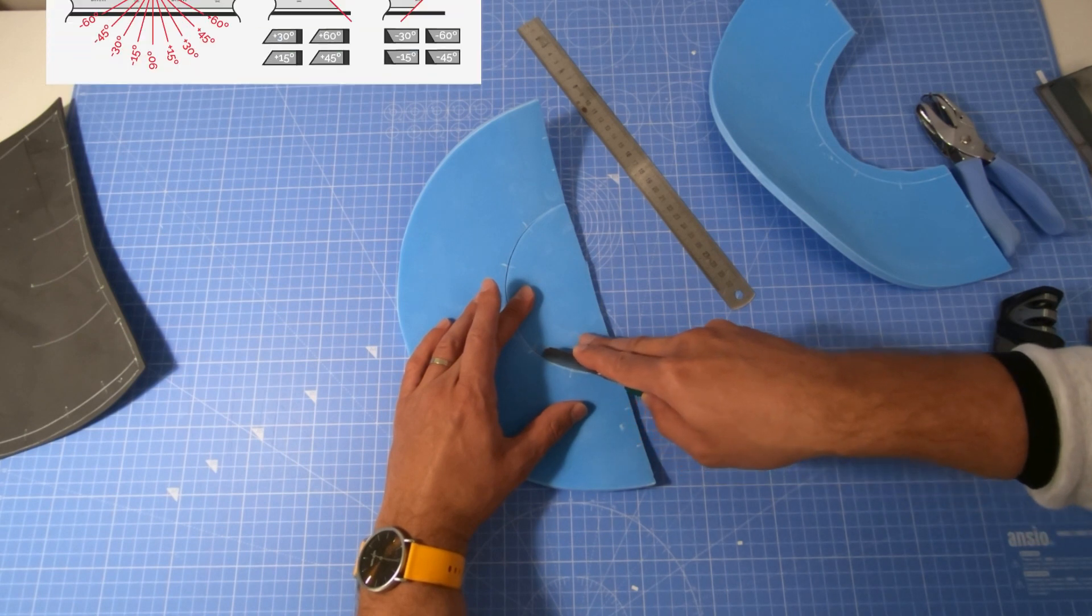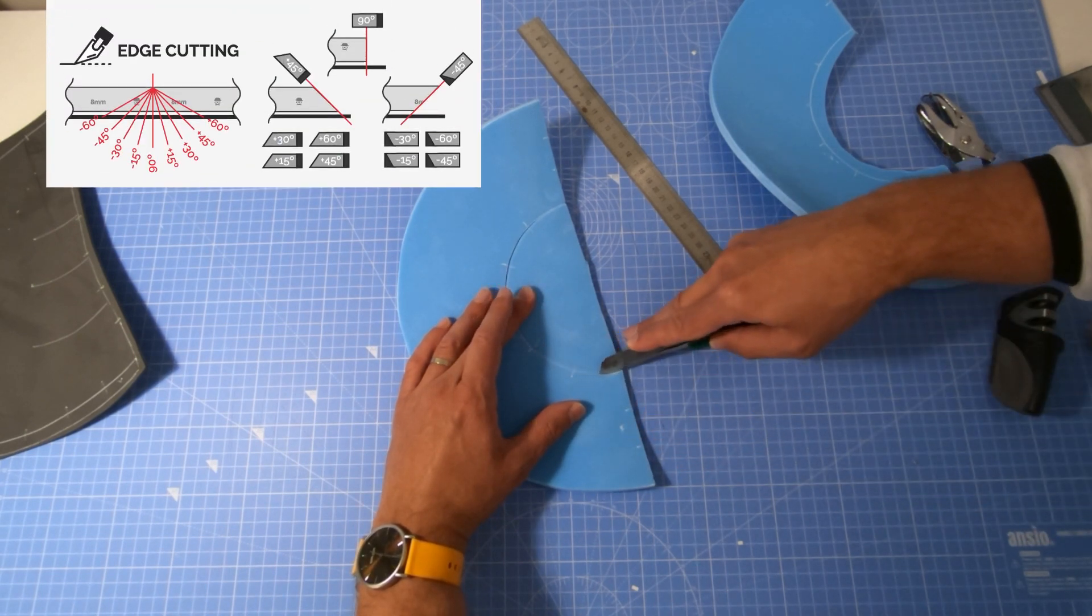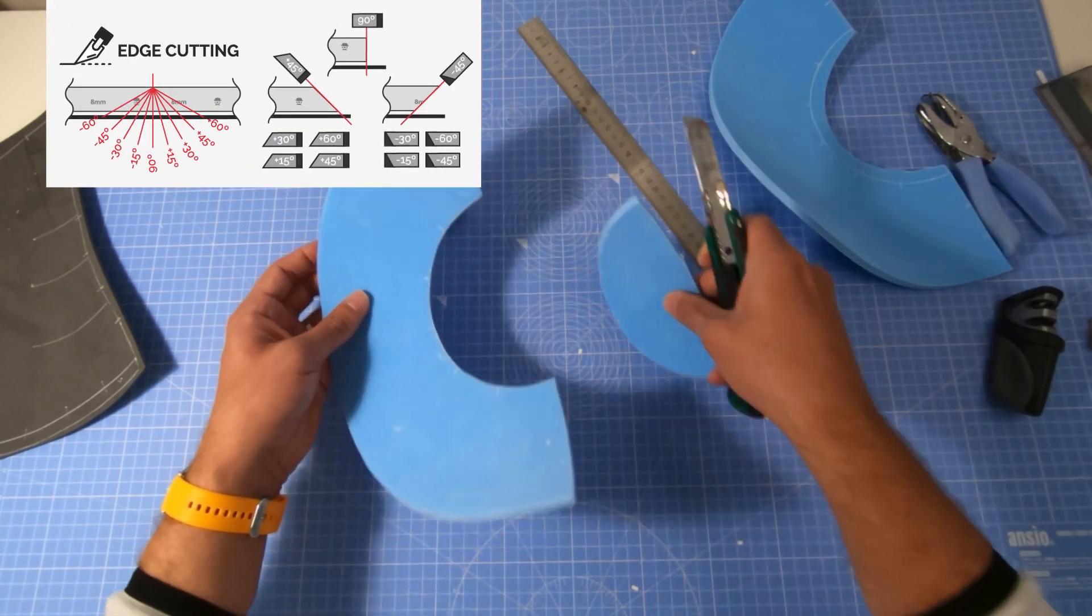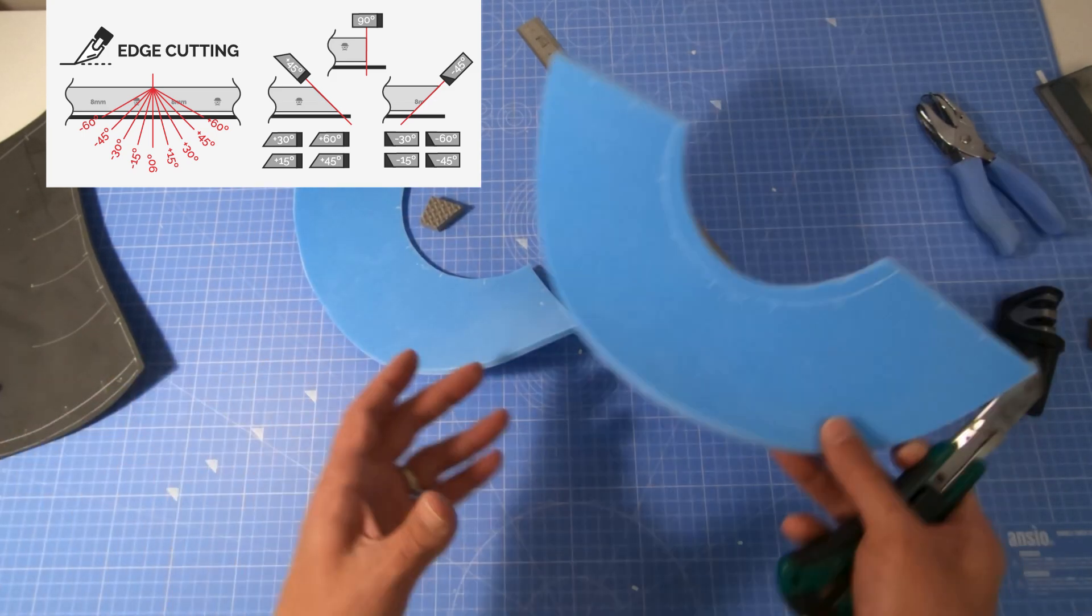Cutting is quite simple, most parts require a 90 degree edge and only few need to be cut at a specific angle, so make sure to look for a beveled cut symbol.